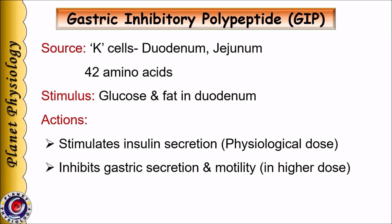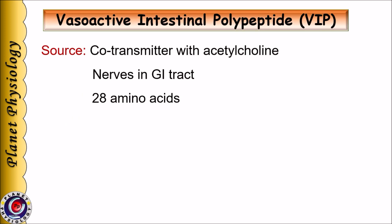The next hormone is gastric inhibitory polypeptide, abbreviated as GIP. It is secreted by K cells in the duodenum and jejunum and has 42 amino acids. GIP is released in response to glucose and fats in the duodenum. In higher doses it inhibits gastric secretion as well as motility, and hence was named gastric inhibitory peptide. However, in physiological doses it stimulates insulin secretion, so it is also called glucose-dependent insulinotropic peptide.